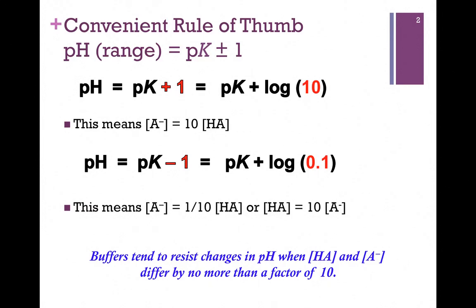At the lower end of our effective range, that would be pK minus 1. Again, on a log scale, to get a negative value, that means we're taking the log of a number less than 1 — in this case, the log of 0.1. That would mean that the concentration of the conjugate base is one-tenth that of the acid, or in whole numbers, the concentration of the acid is 10 times that of its conjugate base.